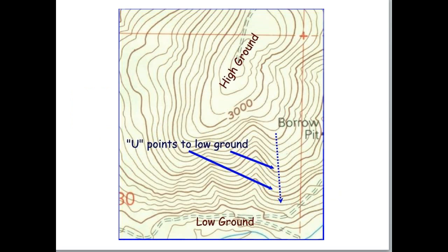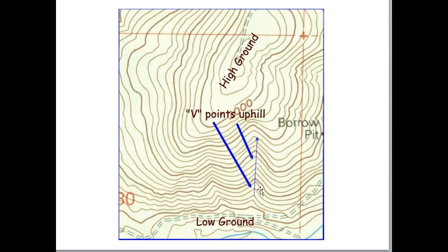Another feature of contour lines is that their shape tells you which direction — up or down — you're going. If you zoom in on a map and see a 3,000-foot line but aren't sure whether the next line is lower, the gently curved lines tend to point downslope. The pointed V-shaped lines point uphill — the point of the V is pointing uphill. This is due to the cutback from erosion, which creates that upside-down V shape.